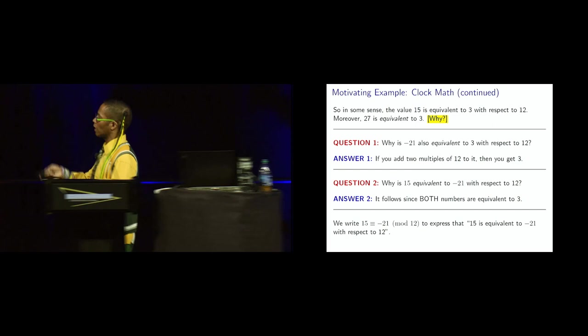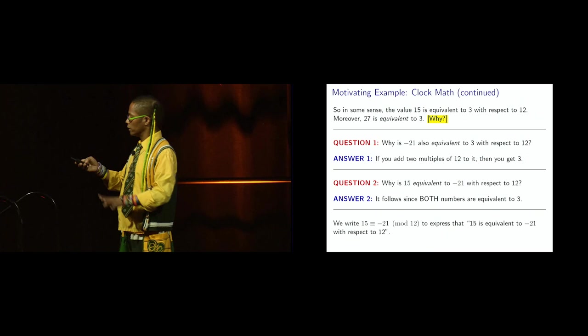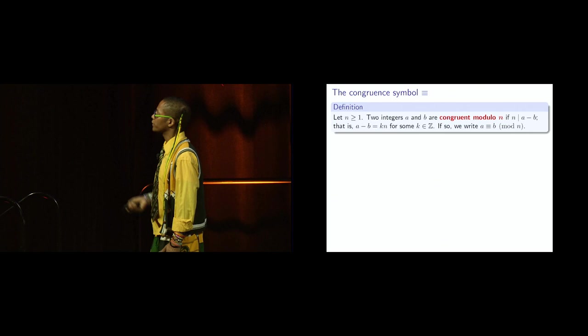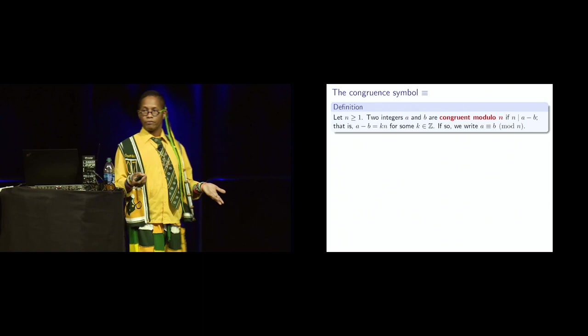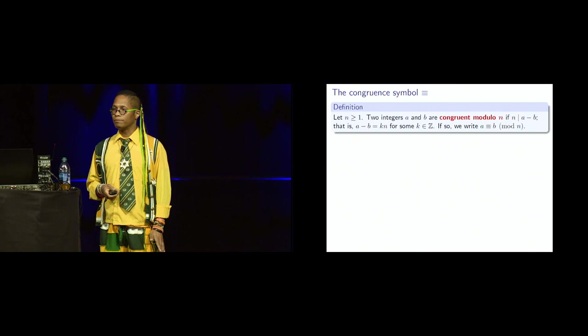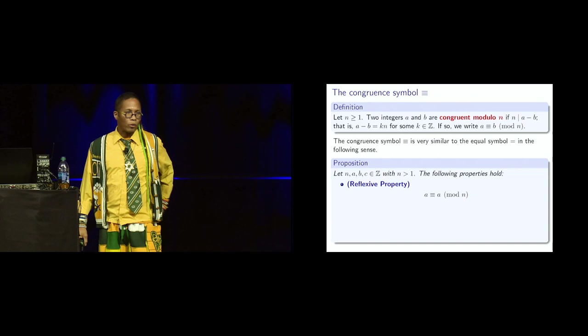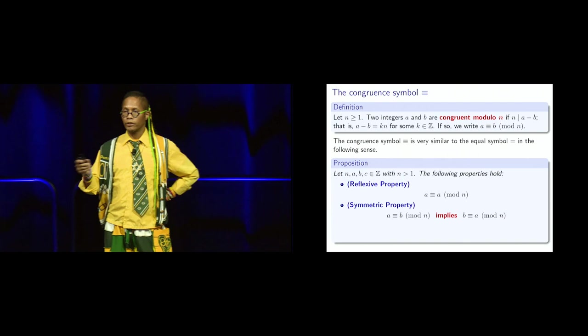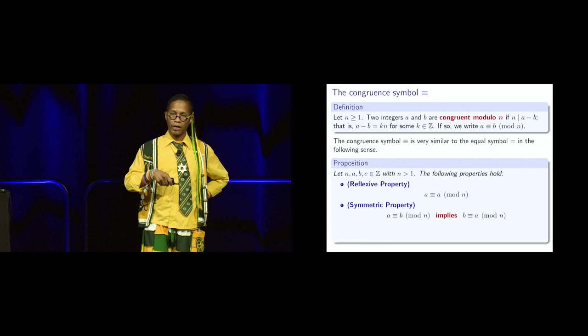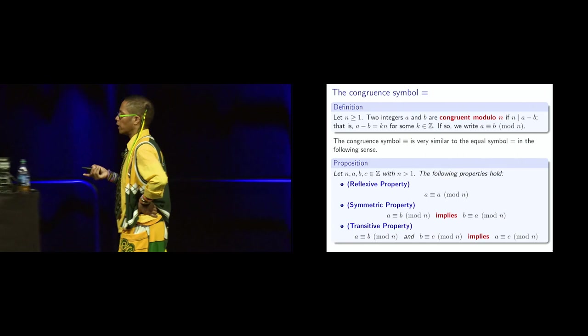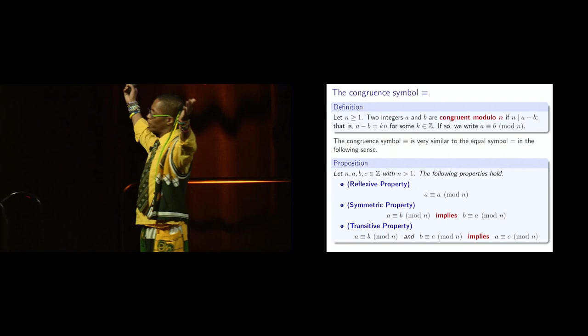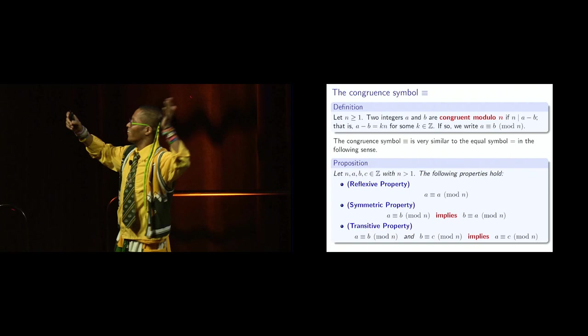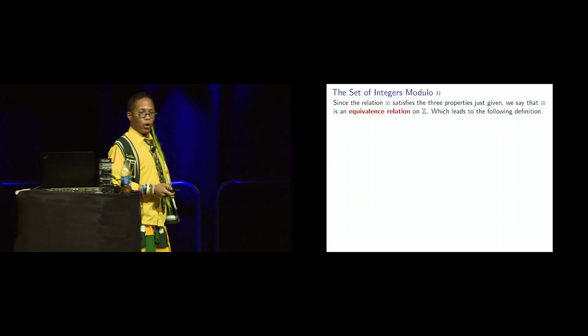So we write this symbol, 15 triple equals symbol negative 21 mod 12 to express that 15 is equivalent to negative 21. So rigorously in math, what do we have? We have this congruence. That's the name of triple equals. So let n be greater than 1. Two integers are congruent, module n, if n divides their difference, i.e. n is, a minus b is a multiple of n. If so, we write a is congruent to b. So, the symbol is similar to equality in the following sense. We have, an integer is always congruent to itself, mod n,e.n. If an integer a is congruent to an integer b, then the integer b is congruent to the integer a, that's called the symmetric property. And lastly, what we saw in the previous slide, in that third example, if an integer a is equivalent, sorry, congruent to b, and b is congruent to c, then a must be congruent to c. We have the transitive property. Woo! We have all three things. What do we have? What kind of relation? Equivalence! Woo! Yay! You all did your homework. Equivalence relation is what we had.